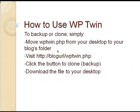So to use it, first of all, to backup, you want to take one of the modules that comes to you when you license WPTwin — that's called WPtwin.php — and move that from your desktop to your blog's folder. You can do that either with FTP or with File Manager or whatever. So you go into your site, into your blog, and you move that file in there. Then you simply visit http://[blog URL]/WPtwin.php. Once you visit WPtwin.php in your blog, you click a button, very simply, to clone your blog, and that will back it up. Then you download it to your desktop.